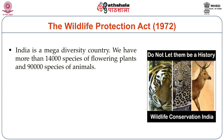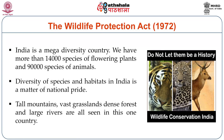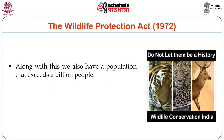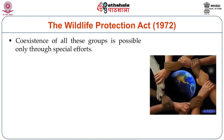India is a mega diversity country. We have more than 14,000 flowering plants and more than 90,000 animals in India. The great diversity of habitats is a matter of pride — dense forests, great deserts, vast grasslands, tall mountains, deep oceans, coral reefs, and mangrove forests. But we also have a population of more than a billion people who live together with plants and animals and share the same habitats. Coexistence of all these groups is possible only through special efforts.